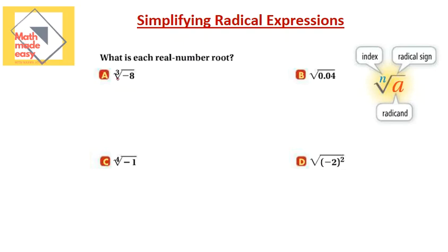So again, this is the radical sign, the number above it is the index — three here is the index — and negative eight is the radicand. Now let's look through our examples to understand how we simplify these. This example is all made of numbers, but the next one will involve variables, so you need to understand the details.